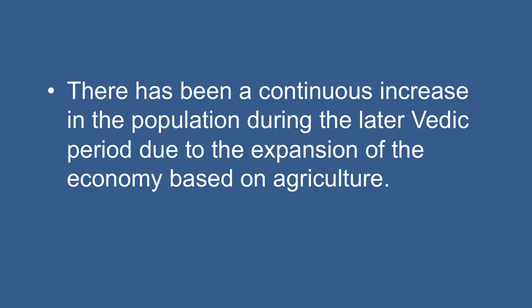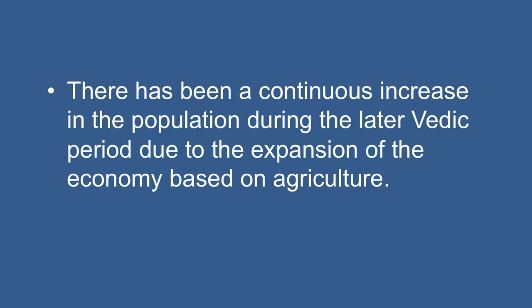There was a continuous increase in population during the later Vedic period due to the expansion of the economy based on agriculture. The increased number and size of painted greyware settlements in the Doab area shows this. With the passage of time, the Vedic people also acquired better knowledge of seasons and irrigation. All these developments resulted in the sustainable enlargement of certain settlements such as Hastinapur and Kaushambi towards the end of the later Vedic period, which slowly began to acquire characteristics of towns.